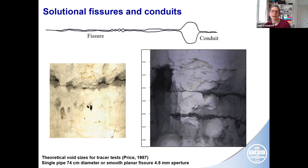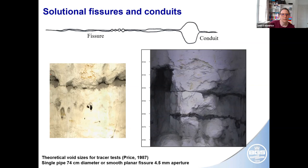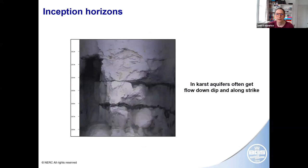People often wrongly think that rapid flow requires caves, but it doesn't. Some tracer tests in Hampshire showed that water in the chalk travelled almost six kilometres just as rapidly as we see in classically karstic aquifers. Mike Price showed that theoretically a single pipe of about 74 centimetres in diameter, or a smooth planar fissure of 4.5 millimetres aperture, could account for these very rapid flows. In reality the voids are not smooth and not planar, so they'll be considerably bigger than 4.5 millimetres. But this shows that rapid flow can occur in networks of smaller conduits and fissures — you don't need caves.